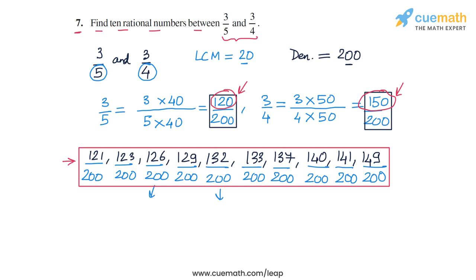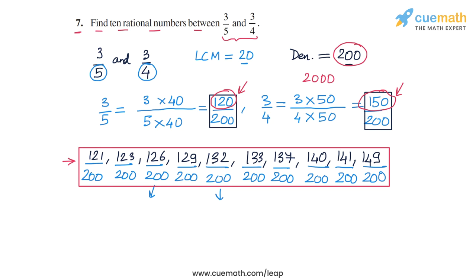Of course, we could have found many more rational numbers by picking an even larger denominator — say 2000 instead of 200 — giving many more integers between the two numerators. The key idea of this question is that between any two rational numbers you can find infinitely many rational numbers, and one way to do that is to pick a sufficiently large common denominator for both.